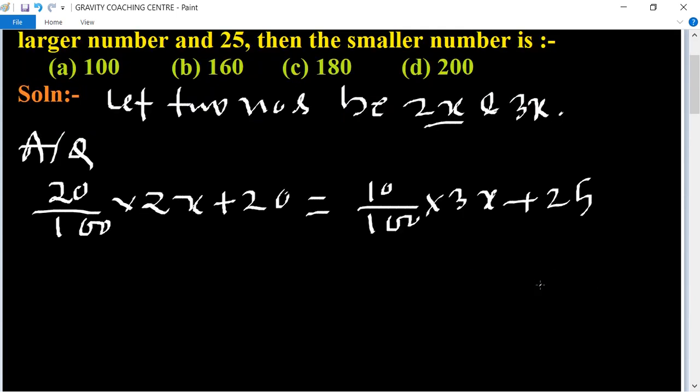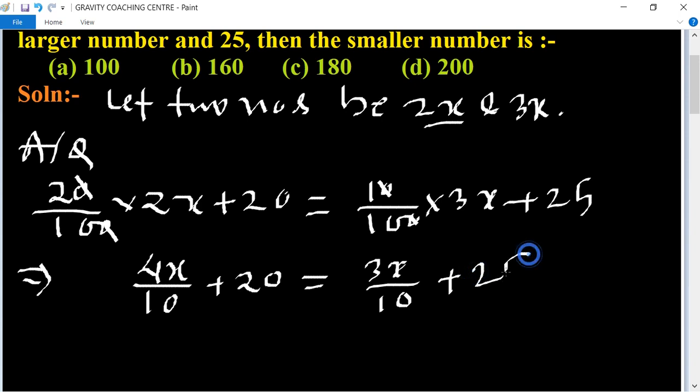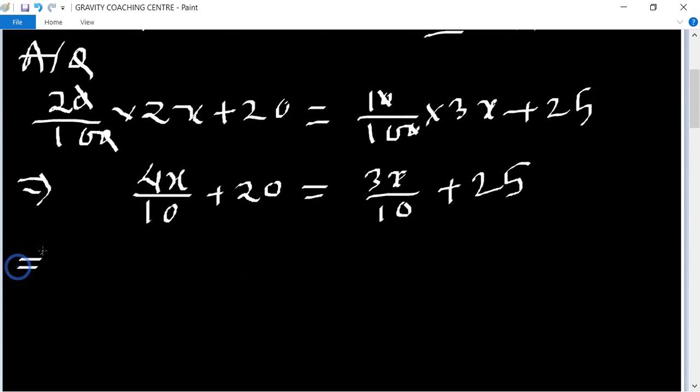Cancel the zeros, so 4x upon 10 plus 20 equals 3x upon 10 plus 25. This implies that 4x upon 10 minus 3x upon 10 equals 25 minus 20.